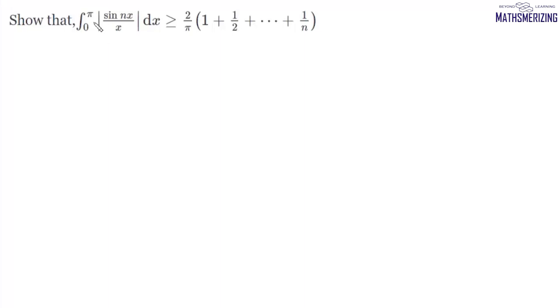The question is to show that the integral from 0 to π of |sin(nx)/x| dx is always greater than or equal to (2/π)(1 + 1/2 + 1/3 + ... + 1/n).